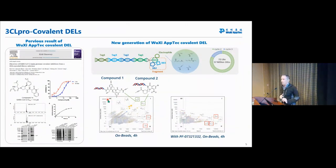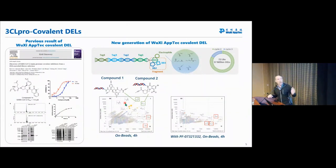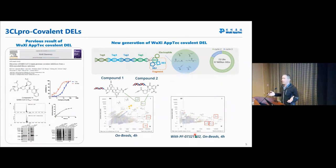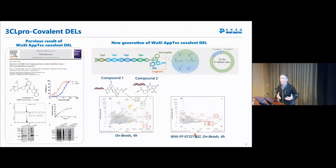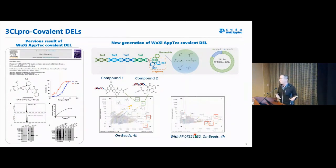We run a screen against 3CL Pro against our new collection of covalent DELs. We see enrichment along the Y-axis and copy count along the X-axis, with the most enriched hits showing up in the upper region, including Compound 1 and Compound 2. When we run the screen but first incubate with a known ligand that blocks the active site of 3CL Pro, all the enrichment is wiped out. This confirms the DELs are working properly and hitting the expected binding pocket.